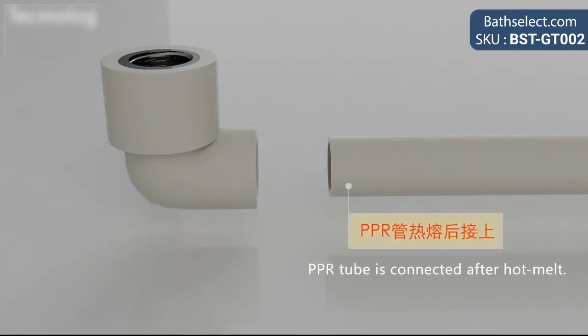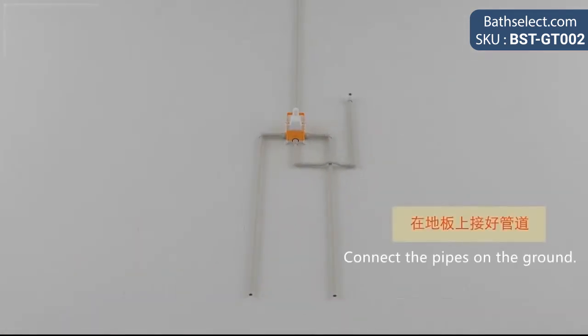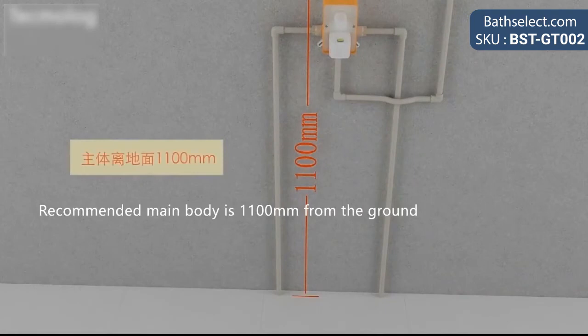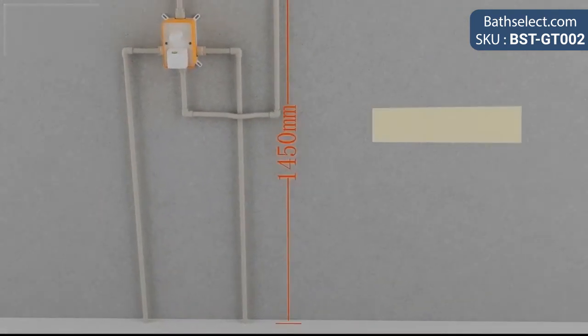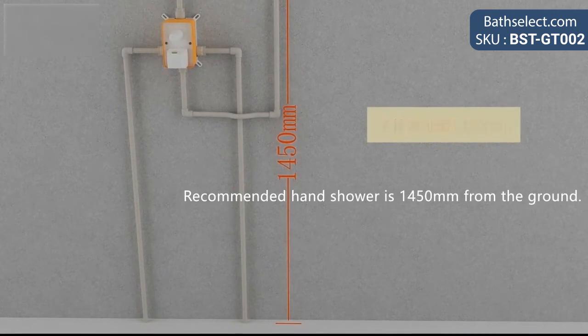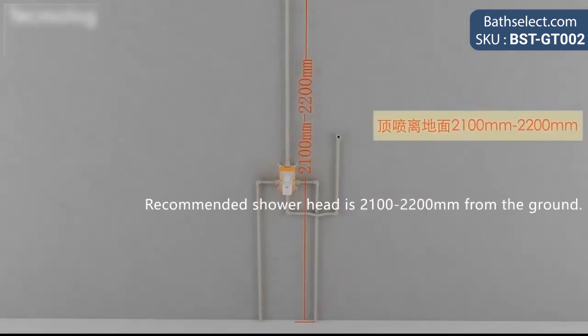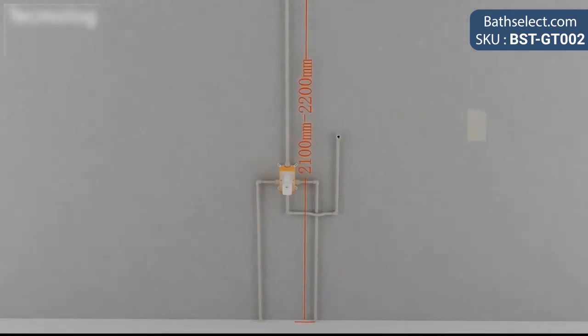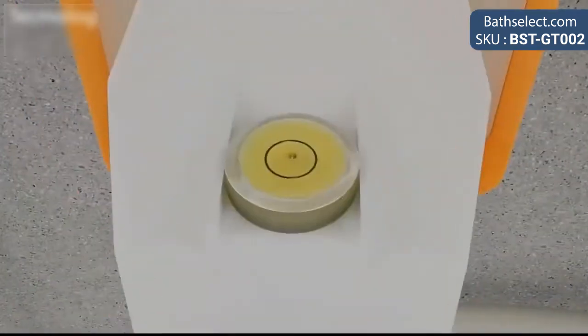The LED mixer shower head with thermostatic mixer features: Brand name BathSelect, model number BST-GT002, installation type can be wall or ceiling mount, shower head capability powers LED light using built-in dynamo. LED light function: turns on when water pressure is turned on, light will dim and brighten depending on pressure.